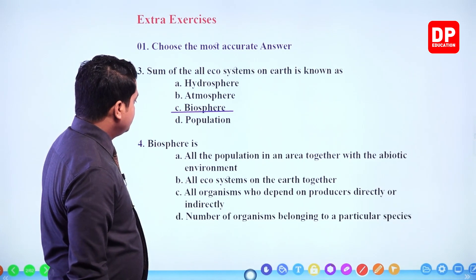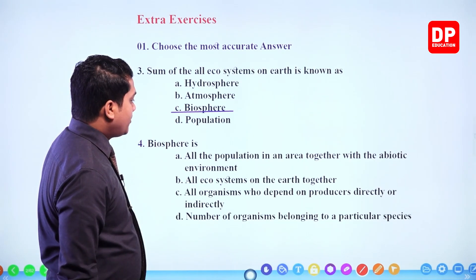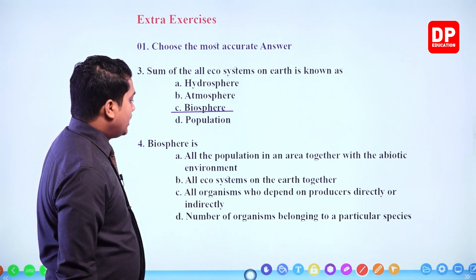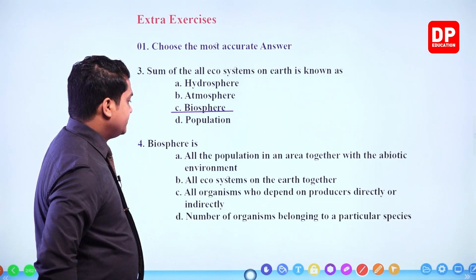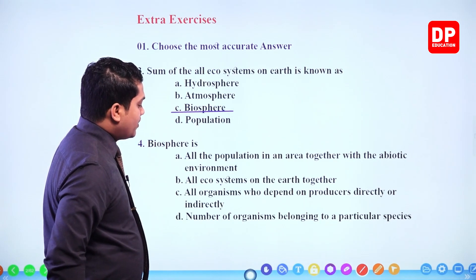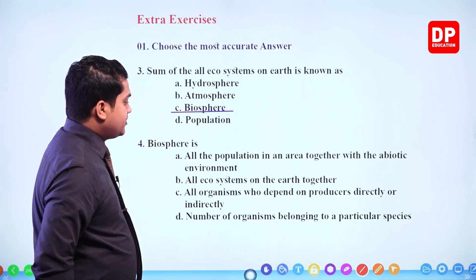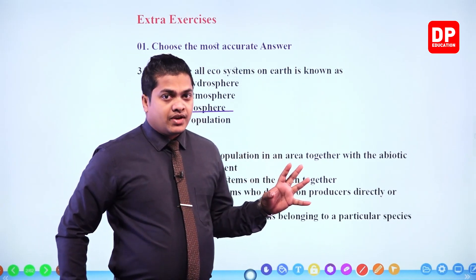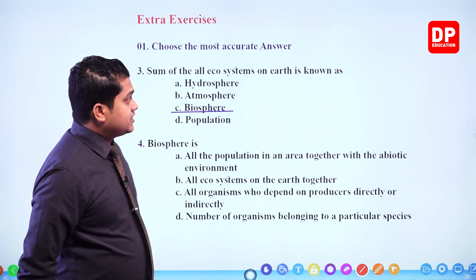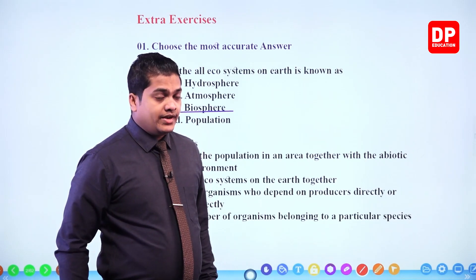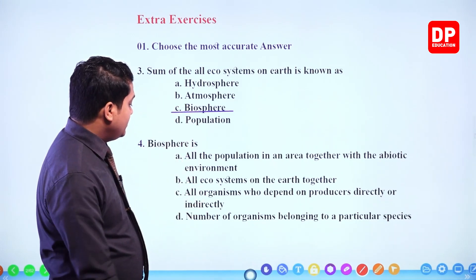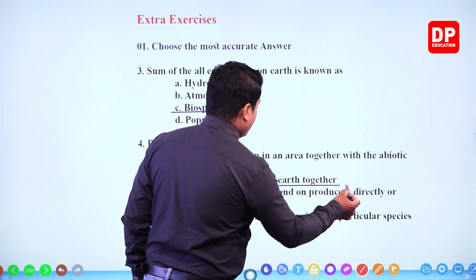Next one: biosphere is — (a) all the populations in an area together with the abiotic environment, (b) all ecosystems on the Earth together, (c) all organisms who depend on producers directly or indirectly, (d) number of organisms belonging to a particular species. Biosphere means the sum of all ecosystems on our planet Earth, so the answer is: all ecosystems on Earth together.